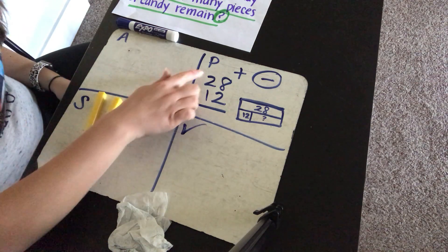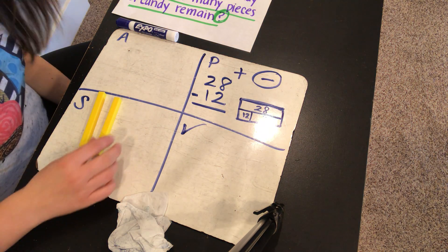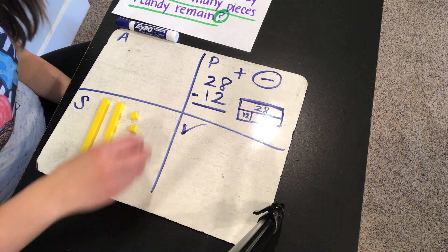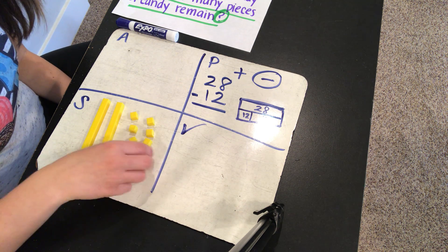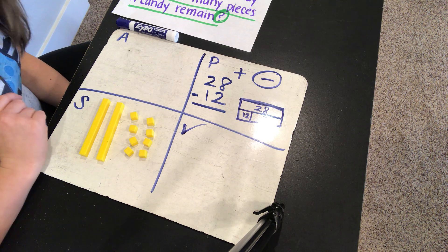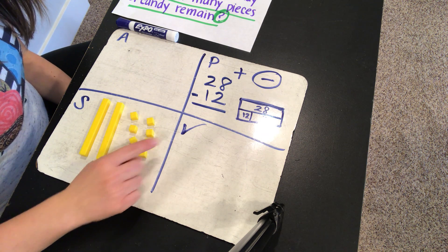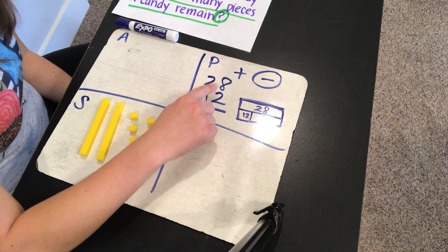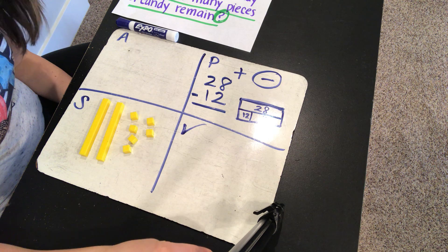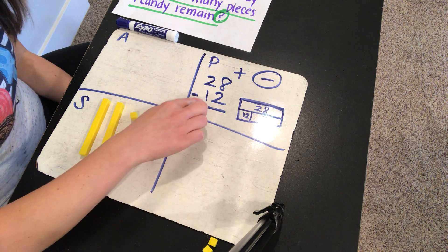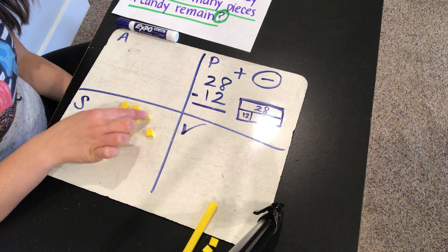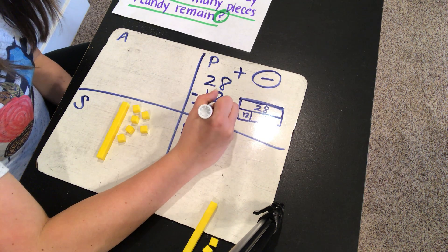We're going to use base 10 blocks. So I need to build the number 28: 10, 20, and then 21, 22, 23, 24, 25, 26, 27, 28. Now we need to take away 12 to get the answer. Let's take away our ones first, because when you start with the algorithm you start with the ones place. We need to take away two ones — one, two. And we need to take away one 10. So 28 minus 12 is 16.